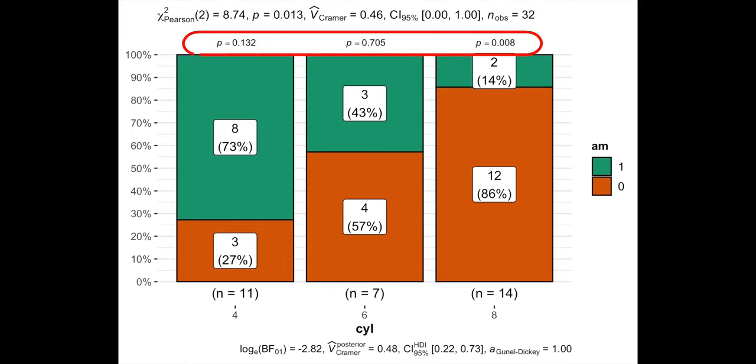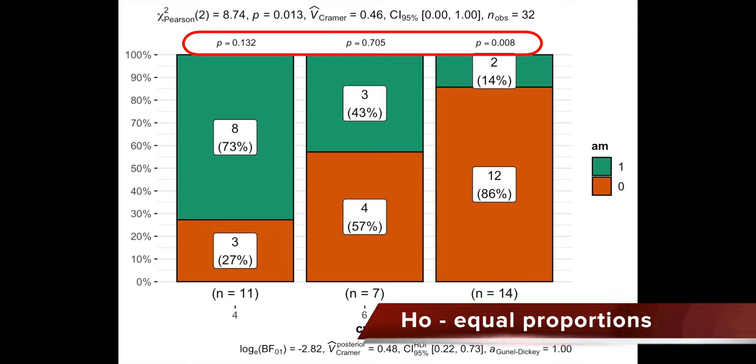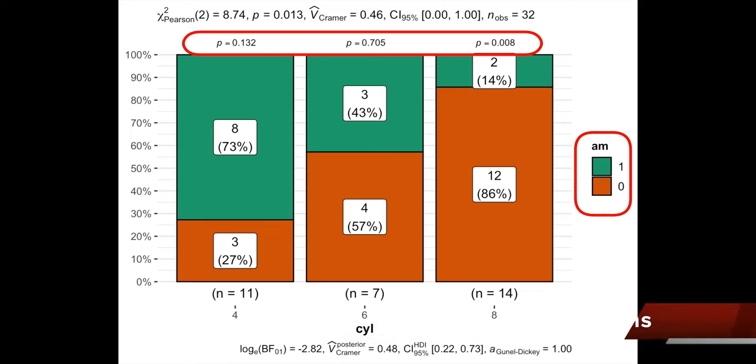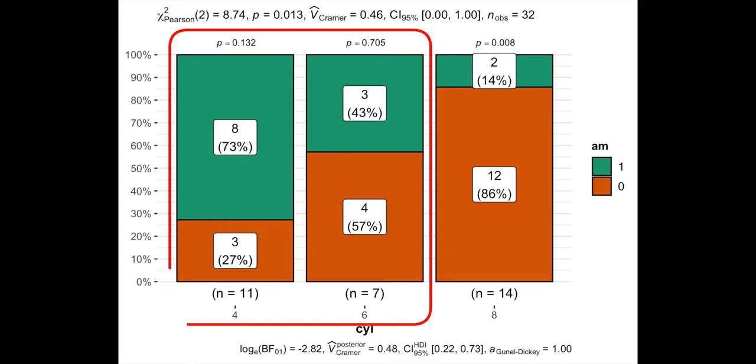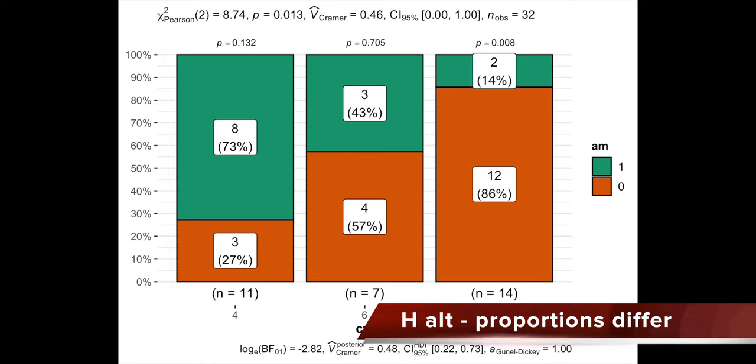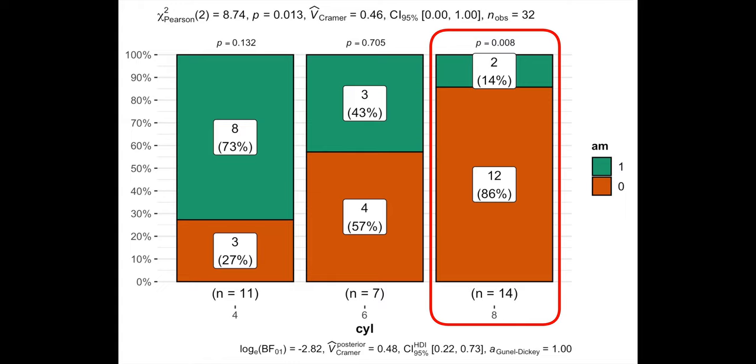We can also see proportion tests for transmissions in each cylinder. They show where the proportions inside every cylinder differ. Our null hypothesis here is that there are equal proportions of different transmissions in a particular category of cylinder, which is the case for cylinders 4 and 6, while our alternative hypothesis is that the proportions differ, which is the case for cylinder 8.